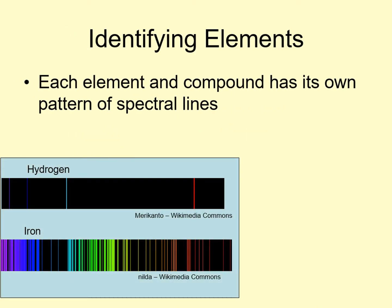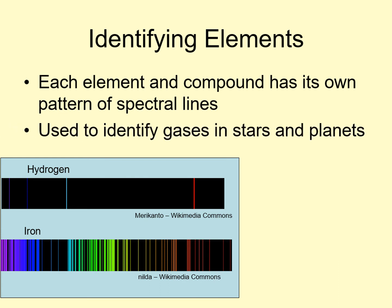Each chemical element and each compound has its own pattern of absorption and emission lines. This pattern is the same whether you're seeing it in emission or in absorption. These act as a sort of fingerprint, telling us which gases are present. So when we look at the spectrum of an object, one of the most important things we can learn is the object's composition.